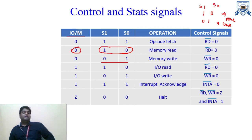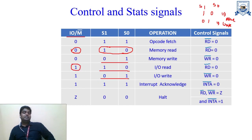Similarly, if IO/M complement is equal to 1 and S1 and S0 is equal to 1, 0 — that means read operation is performed from input-output devices (IO read). When IO/M complement is 1 and S1 and S0 is 0, 1 — that means write operation is performed from input-output devices, that is input-output write.